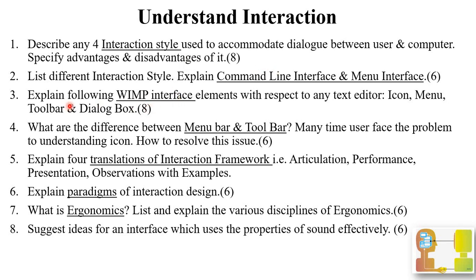A most important question: explain the following WIMP interface elements with respect to any text editor — icon, menu, toolbar, and dialog box for 8 marks. Next: what is the difference between menu bar and toolbar, and how to resolve the issue of users misunderstanding icons between them, for 6 marks? Explain with your own language, examples, and diagrams. Next: explain the four translations of the interaction framework — articulation, performance, presentation, and observation — with examples. Draw the interaction framework diagram with proper naming conventions and explain these four translations point-wise for 8 marks.